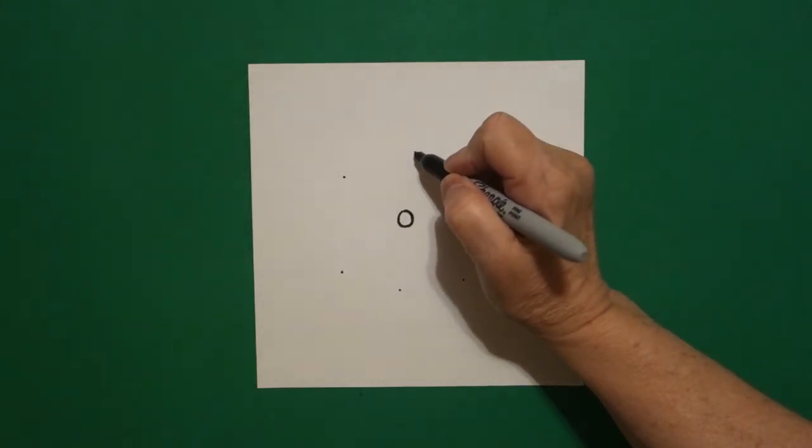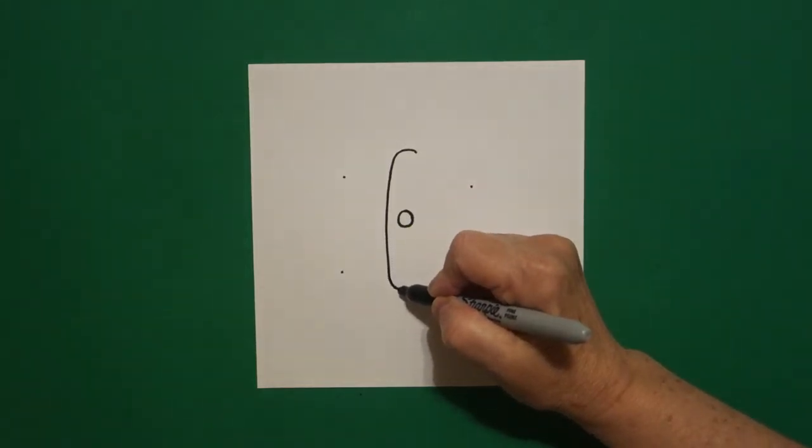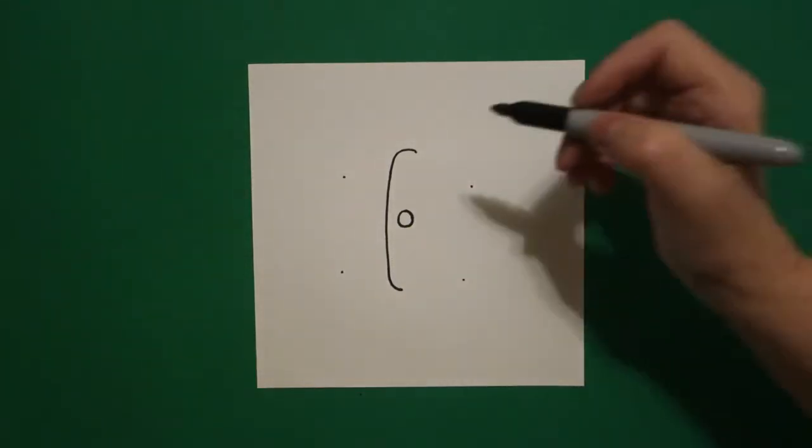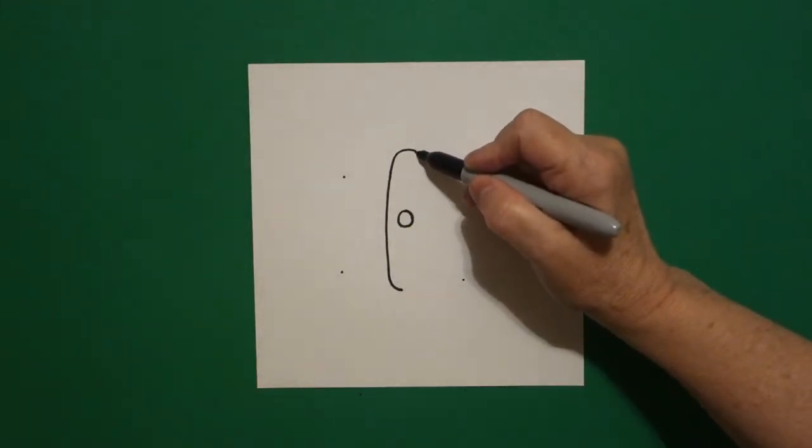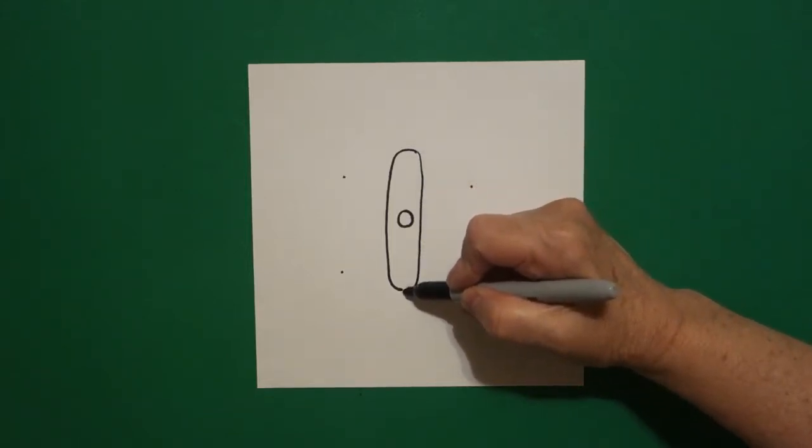Starting at the top dot, I'm going to draw a curve line, straight line, curve line, connect. Come back up, curve line, straight line, curve line, connect.